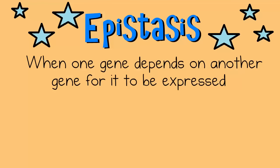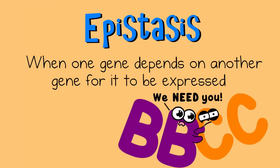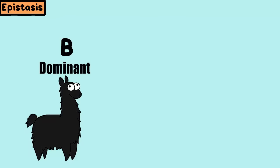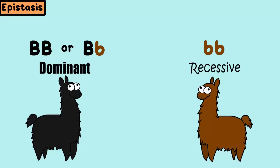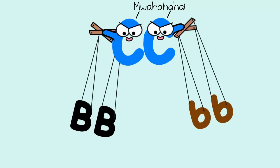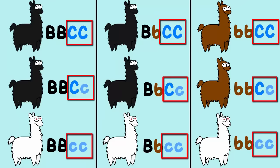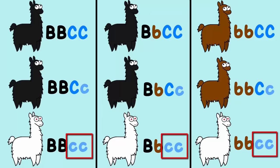One more thing we want to talk about: epistasis. Epistasis is when one gene really depends on another gene for it to even be expressed. Let's pick an animal like a llama. Let's say this llama has a dominant big B allele, which means its wool will be black. So big B, big B or big B, little b means it will have black wool. And if a llama has a pair of recessive alleles, little b, little b, then it will have brown wool. Now, what if there is another gene that controls whether this pigment will even be expressed in the llama in the first place? In this hypothetical example, a llama could have this other gene coded for by big C, big C, big C, little c, or little c, little c in its genotype. However, if the llama has the genotype little c, little c, it will not allow the other gene for wool color to even be expressed.